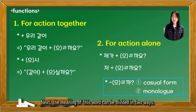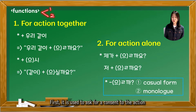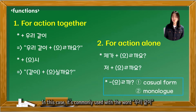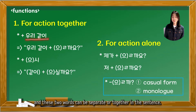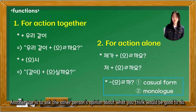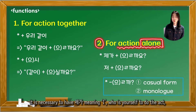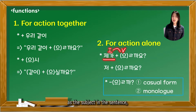Next, the meaning of this word can be divided in two ways. First, it's used to ask for consent to an action you want to do with the other person. In this case, it's commonly used with the word 우리 같이, and these two words can be separate or together in the sentence. Another use is to ask the other person's opinion about what you think would be good to do. In this case, since it is not an act you do together with the other person, it's necessary to have 제가, meaning 'I,' as the subject in the sentence.